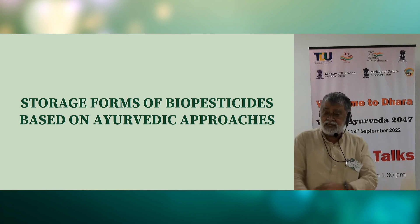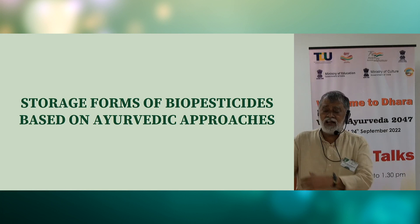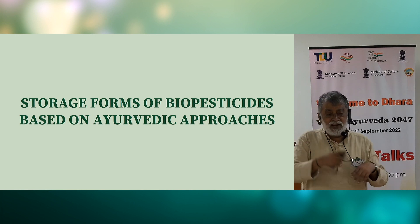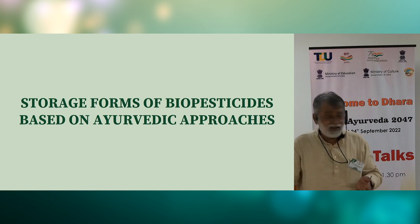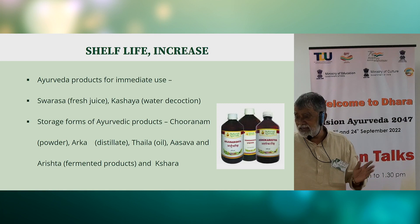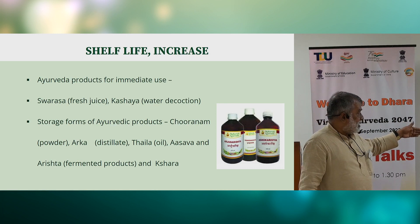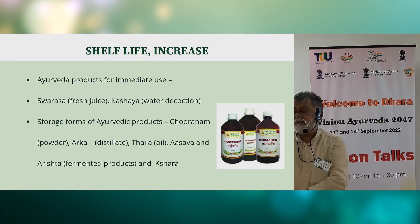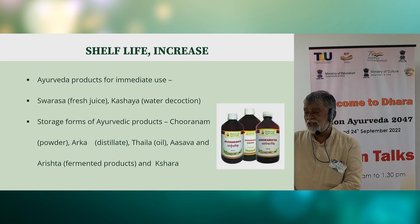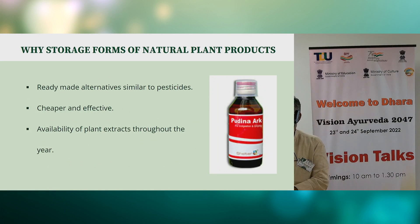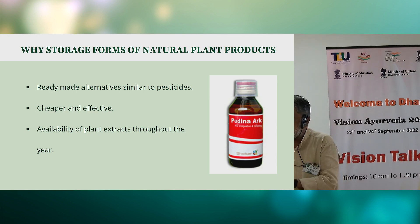On storage forms of biopesticides: today farmers want the convenience of a bottle from a chemical factory that they can simply dilute and spray, rather than preparing complex decoctions. Ayurveda has products for immediate use, like Swarasa or Kashaya — Kashaya is just kept overnight. But there are also storage forms like Arka (a distillate), Thaila (an oil), and Asava and Arishta (fermented products). We have taken materials with biopesticidal properties — like Adhatoda, Arka, and even garlic — converted them into these storage forms, and found them quite effective. This work has been supported even by the Department of Science and Technology to develop storage forms of biopesticides.